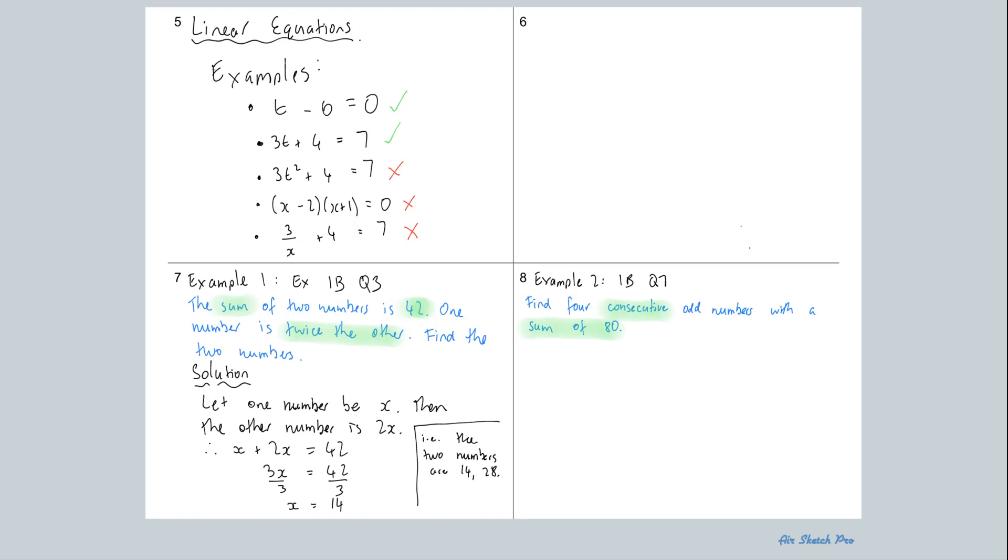So consecutive means one after another. So 1, 2, 3, 4, 5, or 12, 13, 14, 15 are consecutive whole numbers. Consecutive even numbers would be 6, 8, 10, 12, and odd numbers would be 1, 3, 5, 7, etc.